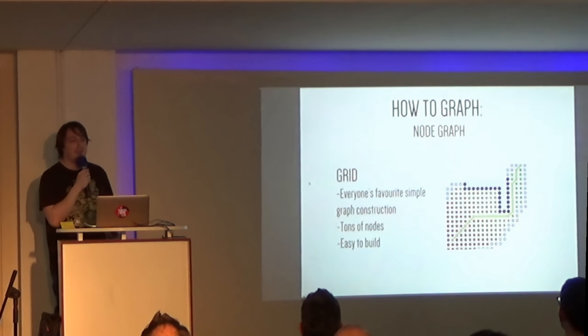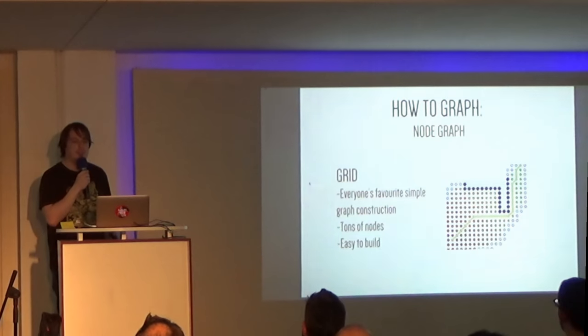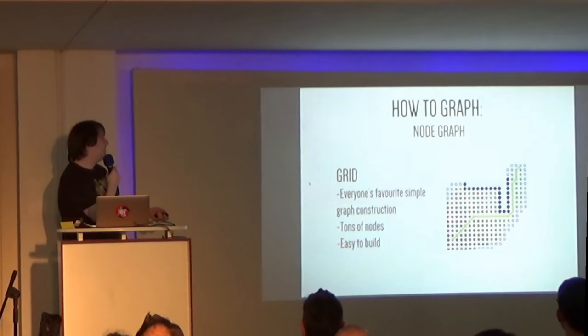So, how to graph? First, we have node graphs. The grid - everyone that has ever programmed a game with pathfinding has implemented the grid because it's really simple to build. You can see equidistant nodes in the grid. And, it's really easy to figure out which ones should be connected because it's always just the neighbors. And then, you end up with a path in the end. But, you can see it's a lot of nodes in this graph. But, it's really easy to implement if you have a game that doesn't have really big levels.